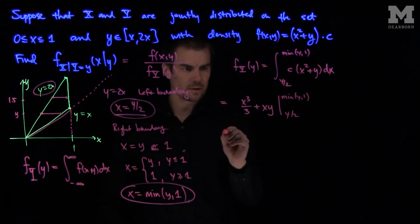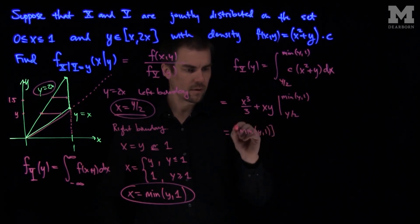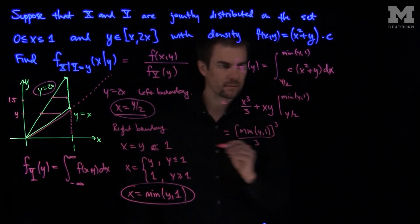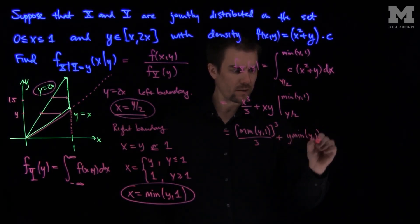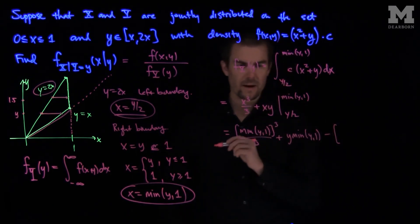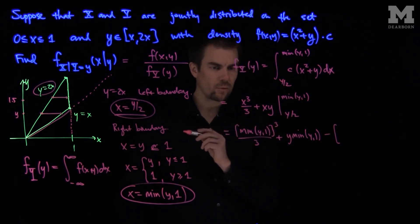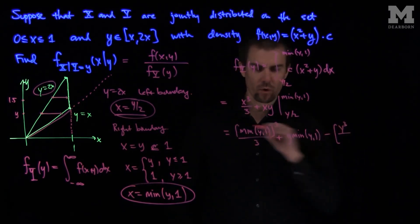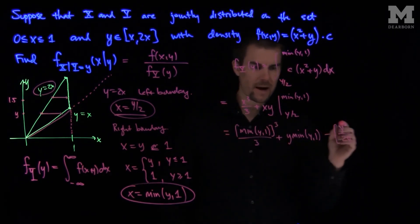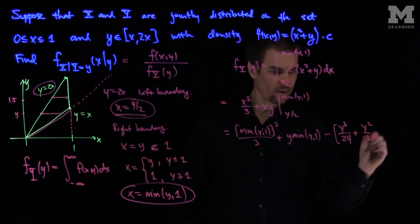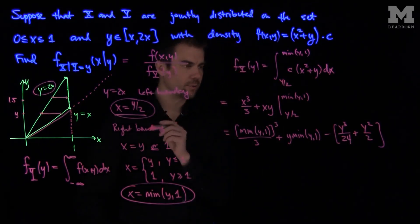The top limit gives the minimum of y and 1, cubed over 3, plus y times the minimum of y and 1. Subtracting the bottom limit: y over 2 cubed is y cubed over 8, so y cubed over 24, and plugging in y over 2 also gives minus y squared over 2. This expression gives us the marginal distribution of y, where y goes between 0 and 2.